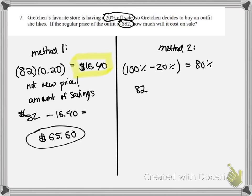So arguably a faster way to calculate the sale price is just to find 80% of the original price. Because if she doesn't have to pay 20% of it, then she does have to pay the other 80%. And doing that, of course, gives us the same answer of $65.60.